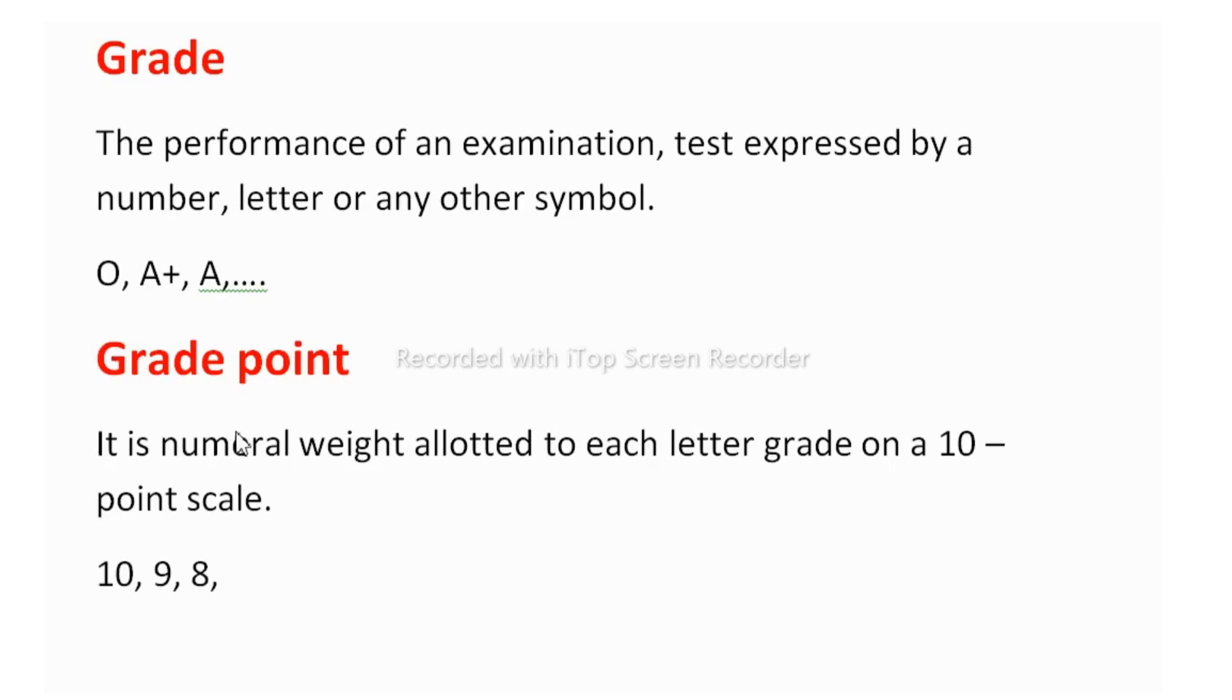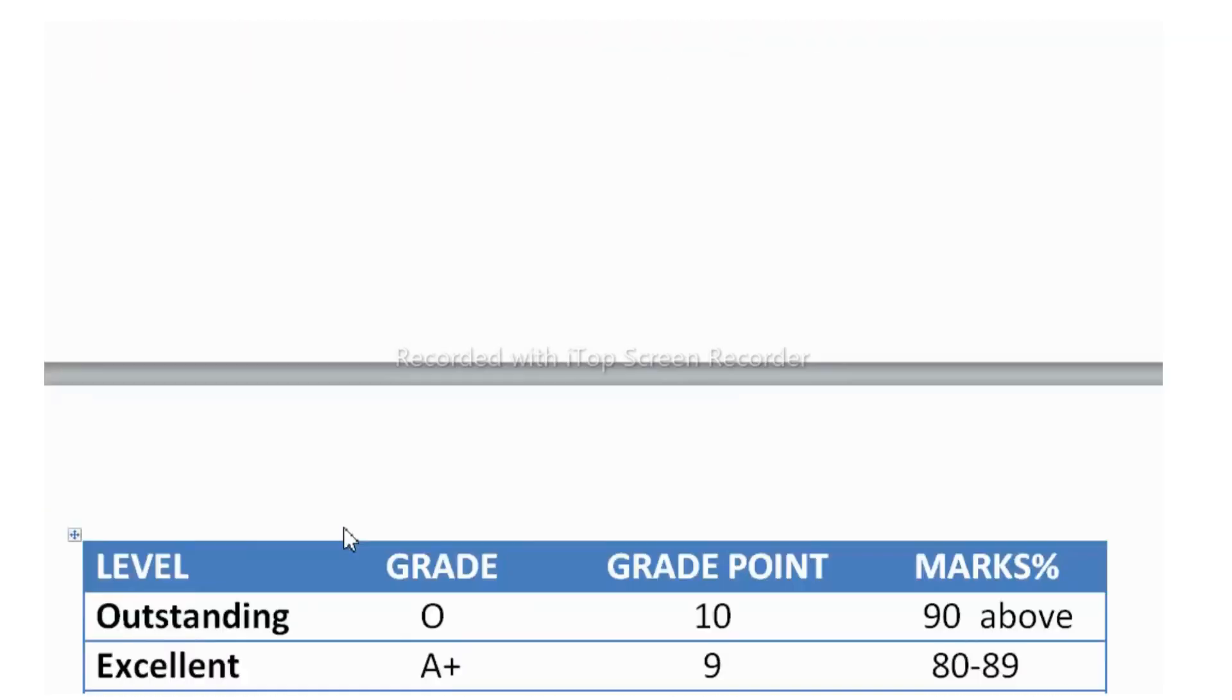Grade point is nothing but it is a numeral weight allotted to each letter grade on 10 point scale. Suppose if the students got O, that means he got 10 grade point. If the students got A plus, that means he got 9 grade point. A, 8 grade point.